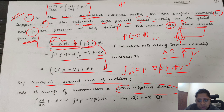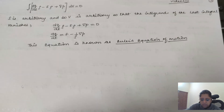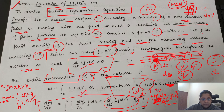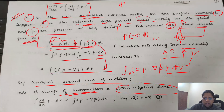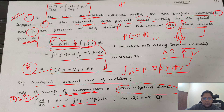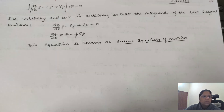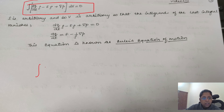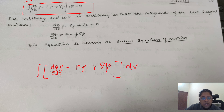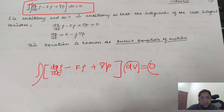By Newton's second law, total applied force equals change of momentum. Equating the momentum rate equation with the force equation, we get inside the integral: ∫(dq/dt · ρ − Fρ + ∇p) dV = 0. Since the integral over arbitrary volume V equals zero, we can remove the integral and dV, giving: ρ·(dq/dt) − Fρ + ∇p = 0.